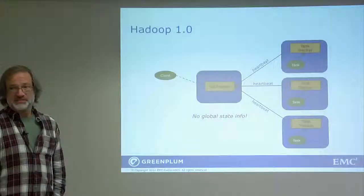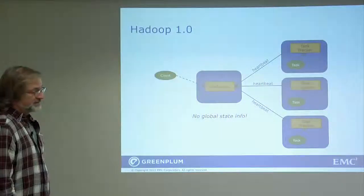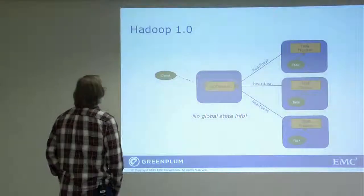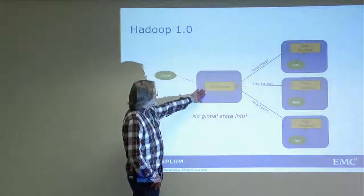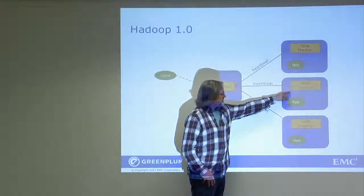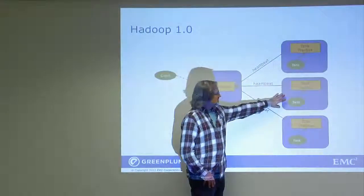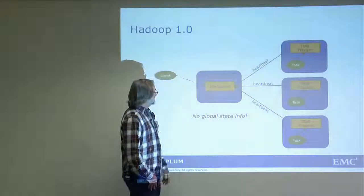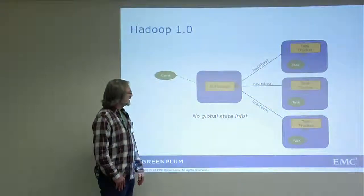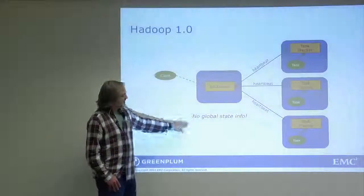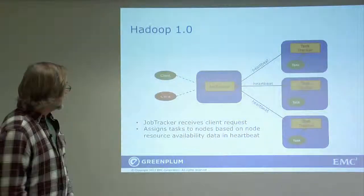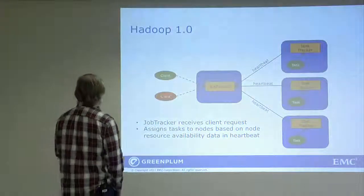If we look at where these problems come from, there are two variants of Hadoop: 1.0 and 2.0, and they're a little different. In Hadoop 1.0, a client program attaches to a job tracker, which is responsible for resource management. The job tracker listens to heartbeats from a task tracker sitting on each node, and the task tracker is responsible for launching and managing individual processes. One key point is that the job tracker does not retain any global state information — it doesn't retain knowledge of who's running where or what the state of the node is. It relies on heartbeats to tell it what that state is.